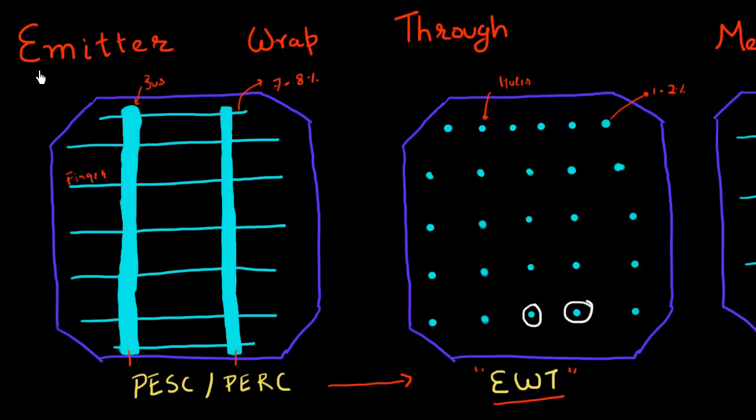Hello folks. So in the last video, we talked about emitter wrapped through or this EWT cell. And we contrasted that to a traditional design and we realized that you can reduce the amount of shading quite substantially by eliminating these bus bars and these fingers and moving that towards the back of the cell.